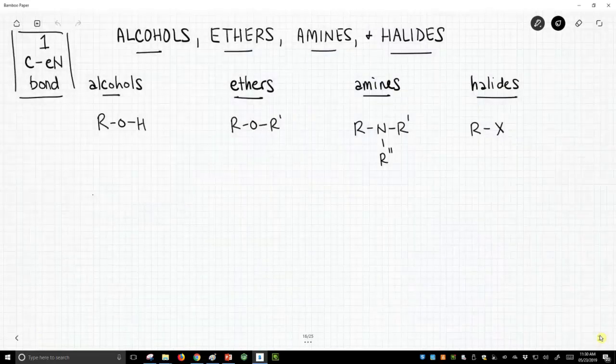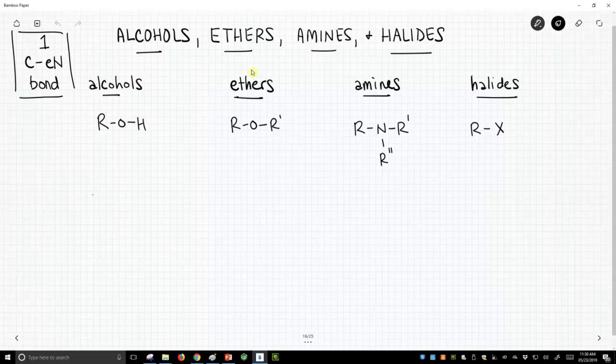So our four functional groups are alcohols, ethers, amines, and halides. The alcohol has an R group on an oxygen with a hydrogen on the oxygen. Let's see an example.